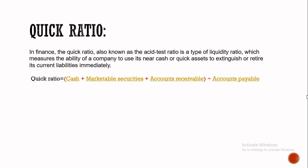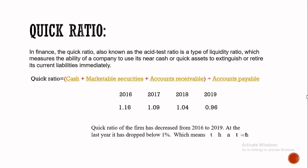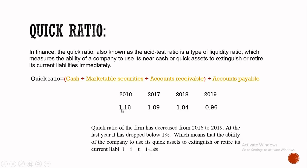The formula for the quick ratio is: cash plus marketable securities plus accounts receivable, divided by accounts payable. The quick ratio of this firm has decreased from 2016 to 2019. In 2016 it was 1.16, and it dropped in 2017, again in 2018, and again in 2019. At the last year it dropped below 1.0, which means the company's ability to use quick assets to extinguish current liabilities immediately is declining — the company is not doing well.